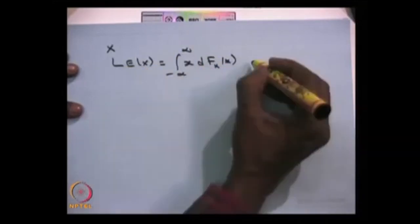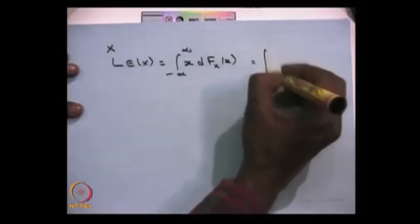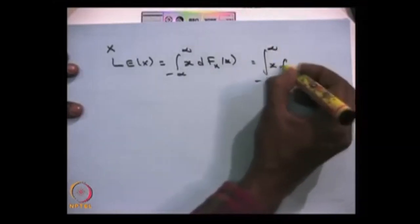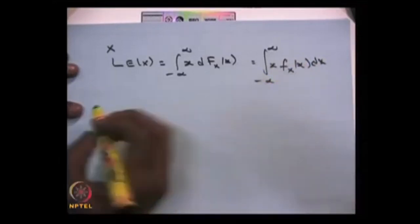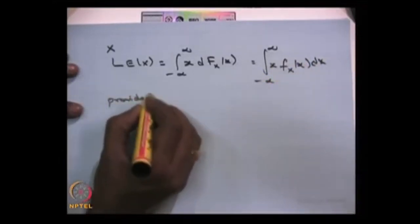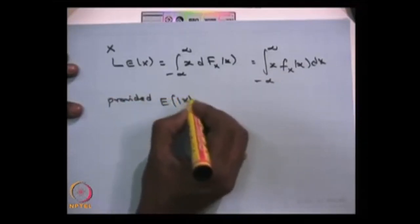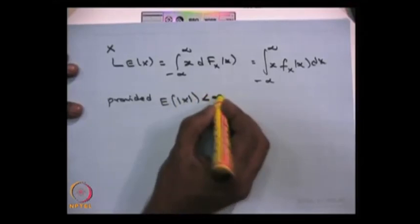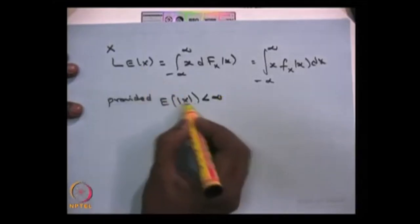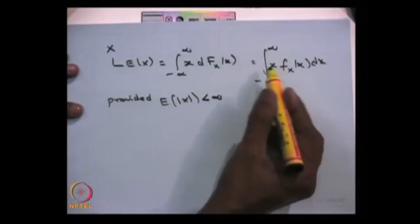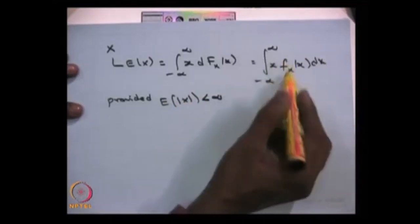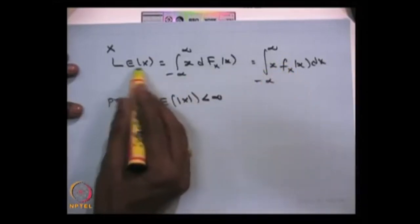If the random variable is continuous, then the CDF is a continuous function, so the expectation is the integral from minus infinity to infinity of x times f(x) dx. In that case we also cross-check whether this integration converges — specifically, whether the expectation of the absolute value of X converges, because absolute convergence implies convergence. Whenever you replace X by |X| and find that this provided condition is satisfied, then the integral without the absolute value converges, and that value is the expectation of the random variable.